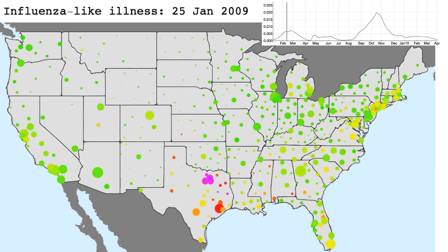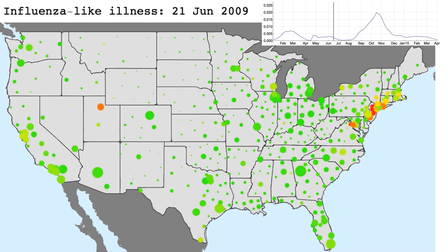There's a spring wave which is really focused on New York and the northeast. Then it goes quiet in the summer, and then the autumn wave comes, spreading out radially starting in the southeast. This is an unprecedented level of data and really allows us to make new insights into how pandemics spread.